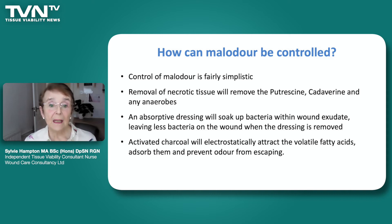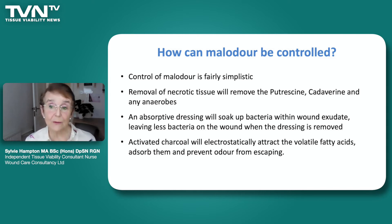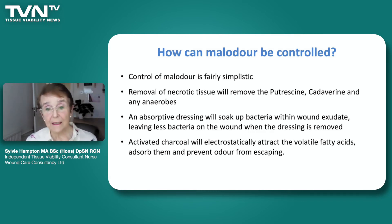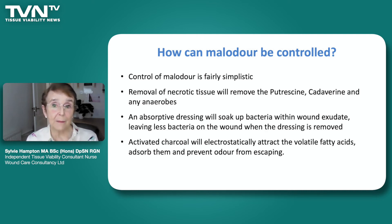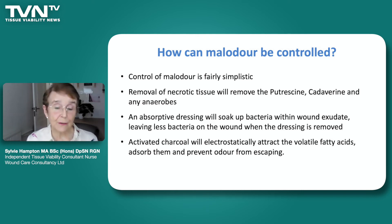An absorptive dressing such as Clinisorb will soak up the bacteria with the wound exudate, and when the dressing is removed the bacteria will be removed, leaving less bacteria on the wound. The activated charcoal in Clinisorb will electrostatically attract the volatile fatty acids, absorb them, and prevent odour from escaping. Activated charcoal is used on soldiers' uniforms because it prevents bacterial and chemical contamination.